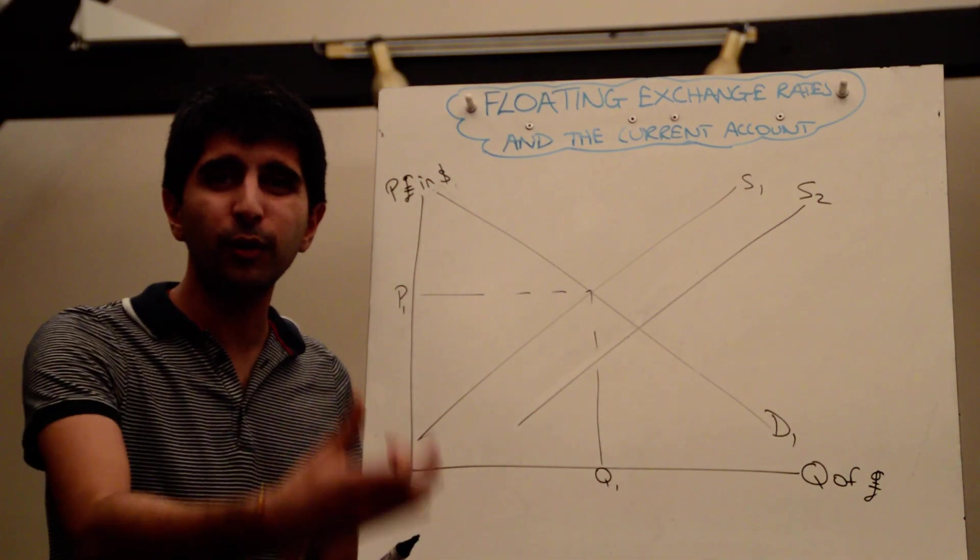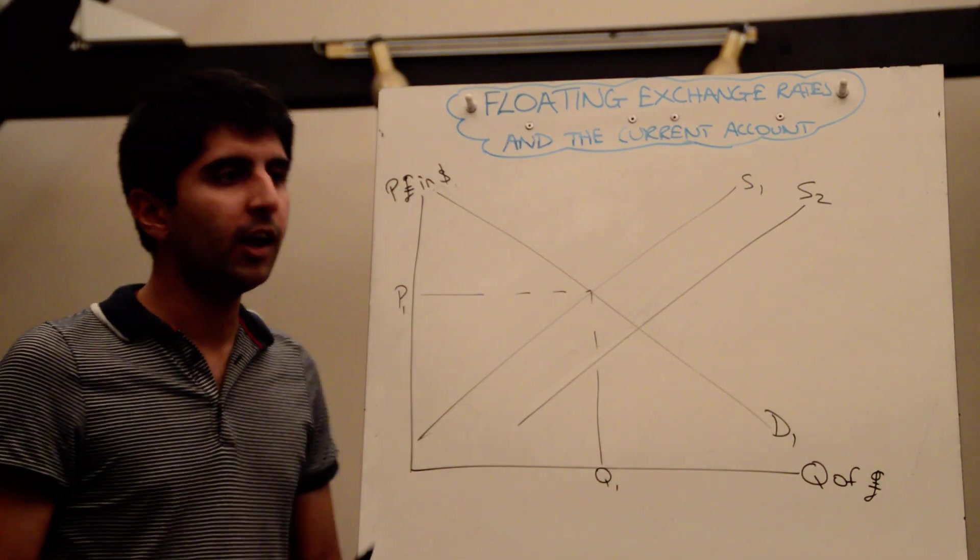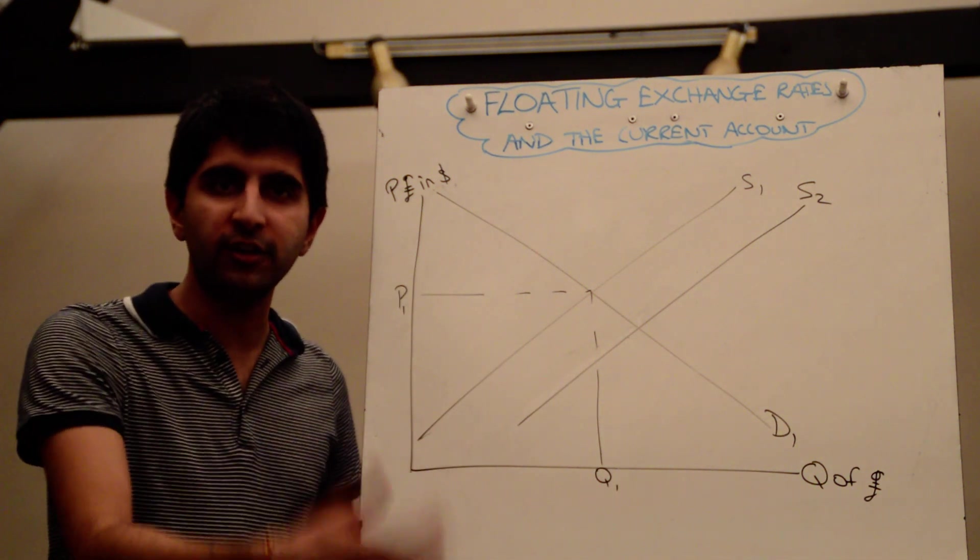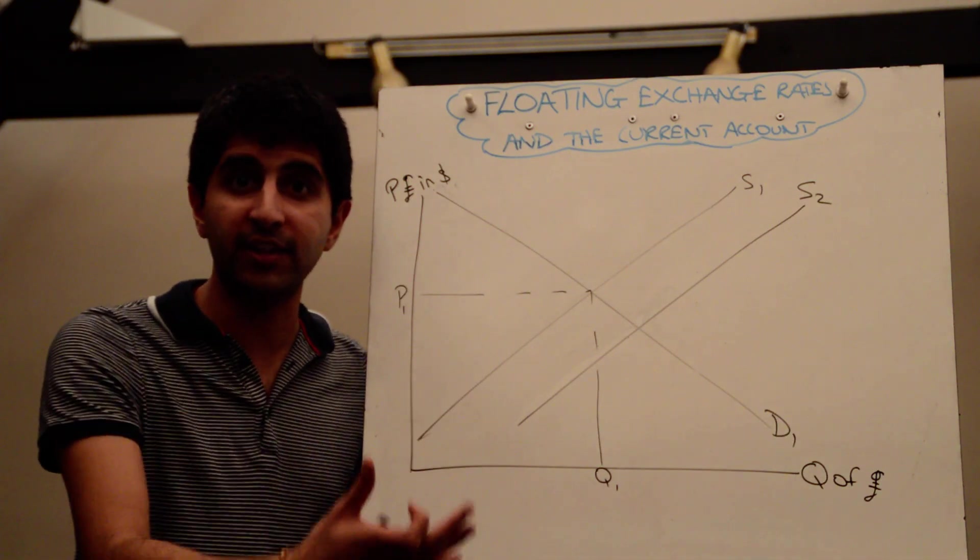Why is that? Because to buy loads and loads of these imports, more imports than exports, we have to supply our pound, we have to exchange our pound in order to buy foreign imports, in order to exchange it for a foreign currency and therefore buy the imports.